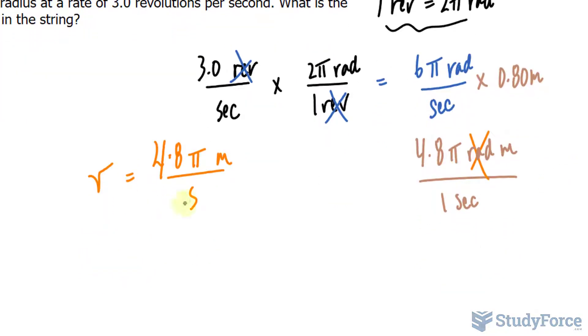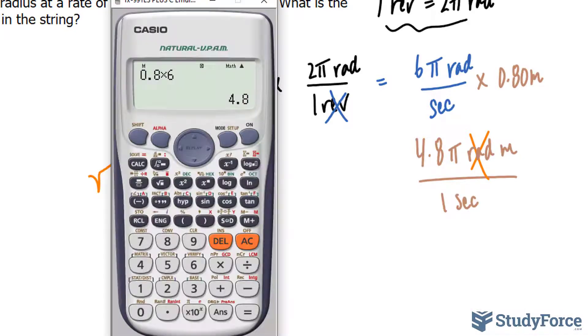And of course, you can actually find out what 4.8 pi is. Just multiply 4.8 times pi, and you'll actually get a quantitative value that you can read for the speed.